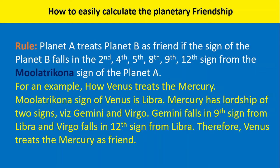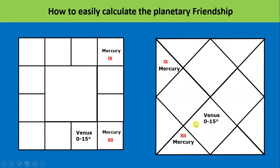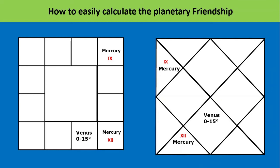Let's see this example in charts. In Libra, Venus has its Mulatrikona sign. Gemini is the 3rd sign and Virgo is the 6th sign from Libra. Calculating positions from Venus's Mulatrikona: Gemini falls at the 9th position, and Virgo falls at the 12th position. Since both 9 and 12 are in the friendly positions list, Venus treats Mercury as friend.